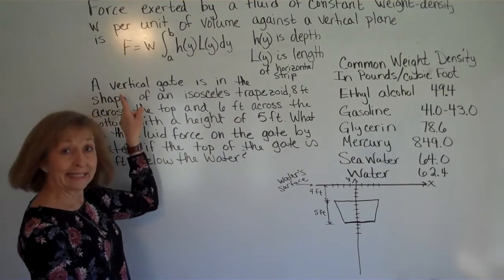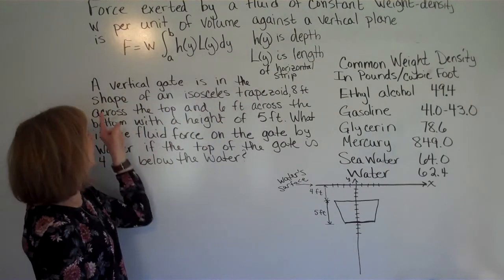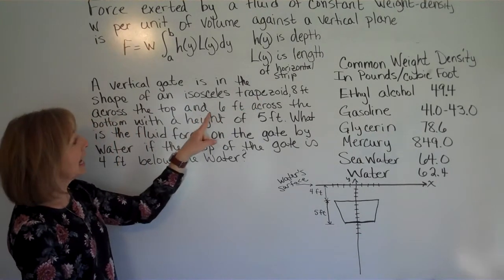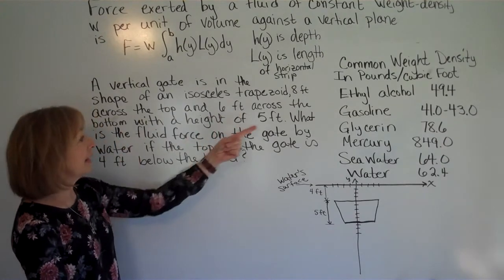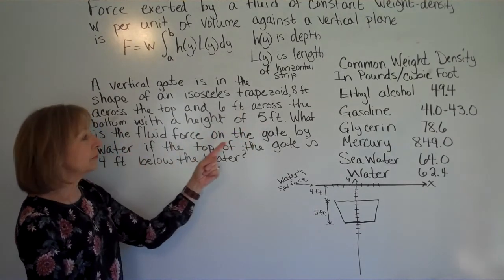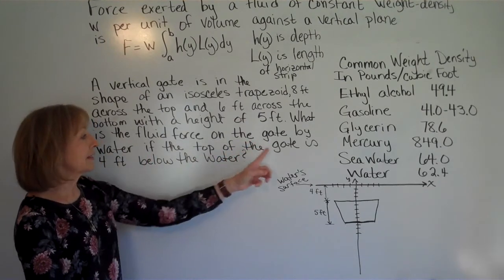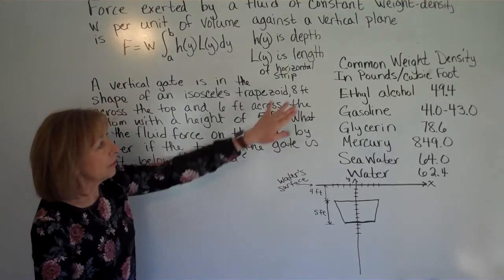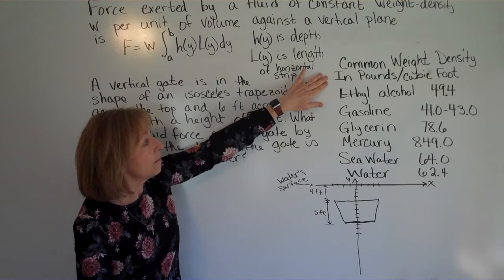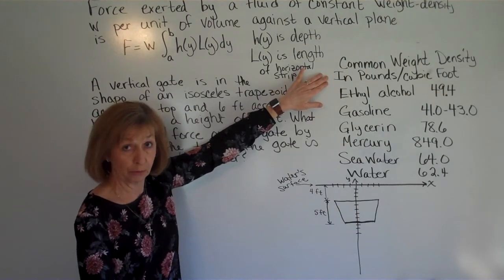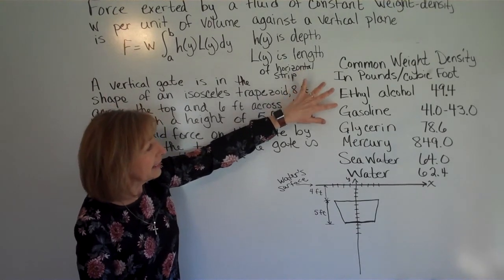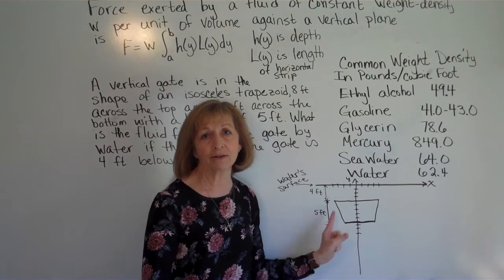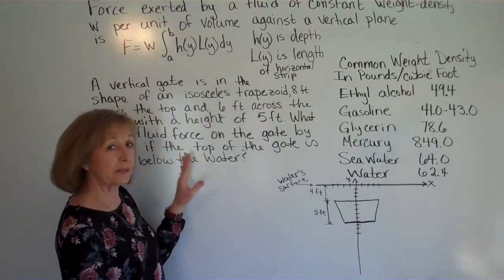Now let's look at an example. A vertical gate is in the shape of an isosceles trapezoid that's eight feet across the top, six feet across the bottom, with a height of five feet. What is the fluid force on the gate by water if the top of the gate is four feet below the water? Over here I have a table of some just common weight densities in pounds per cubic feet and what their weight densities are. And then I've got a diagram that I've already started using the specifics of the problem.